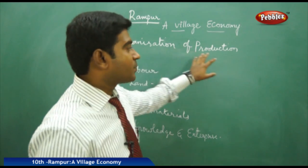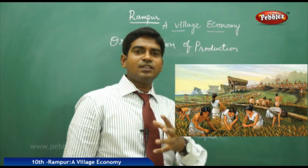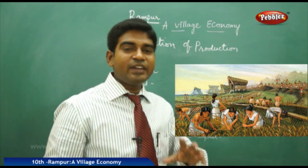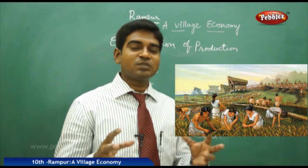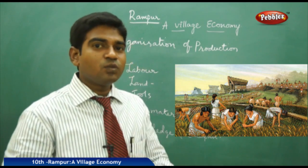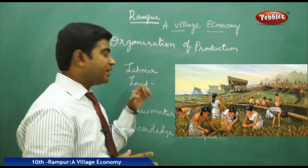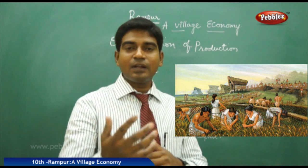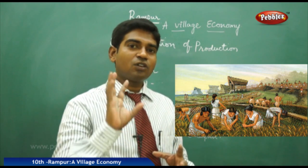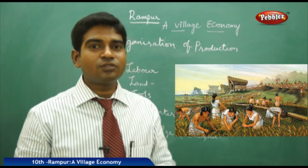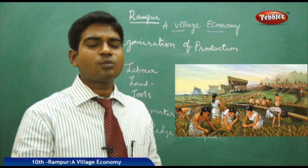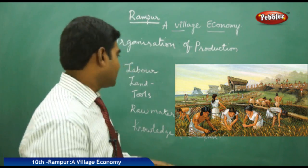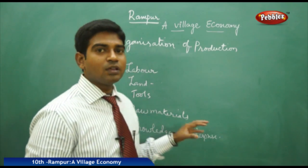Moving on to the most crucial part — the organization of production. To organize production in any village, there are five key factors. First, we need land — a physical place to do something. Second, we need labor — people to work for us. Workers are categorized into skilled and unskilled people. Those who work for pay in fields are called casual labor, and without them you cannot get your land cultivated.